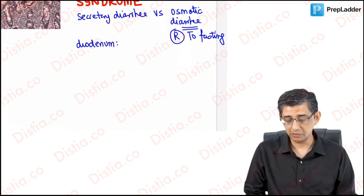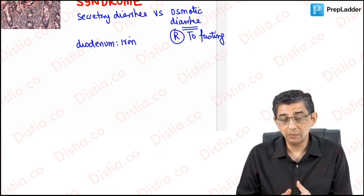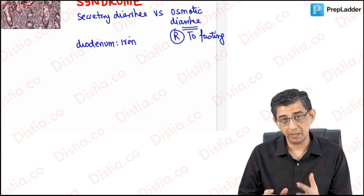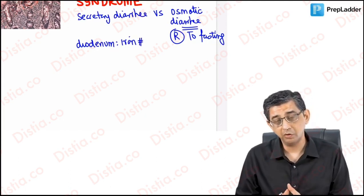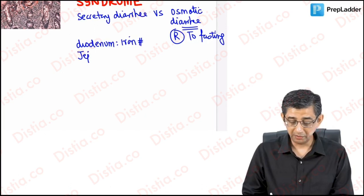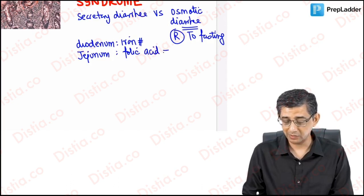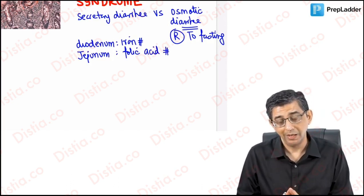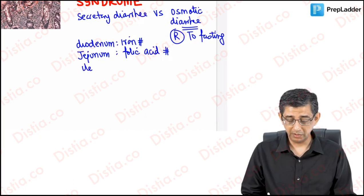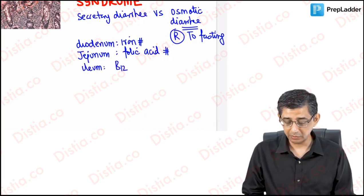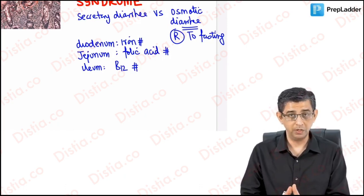The duodenum is the primary site for iron absorption. In malabsorption syndrome like celiac sprue, the duodenum and jejunum are damaged, impairing iron absorption and reducing serum ferritin. Folic acid is absorbed from both duodenum and jejunum, but the single best answer for folic acid deficiency points to jejunal damage. The terminal ileum is the site for vitamin B12 absorption.